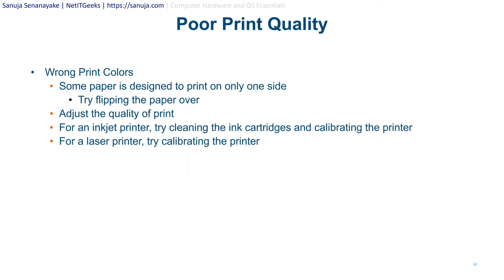For wrong print colors, some paper is designed to print on only one side. If you are printing on that type of paper, make sure you are putting the correct side up so it prints on the right side, especially with photo paper.